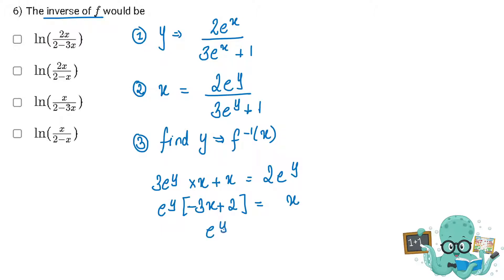Now my e raised to the power y is x upon 2 minus 3x. To bring y down, I need to take ln. We know the formula of ln which says that ln a power b can be written as b ln a.